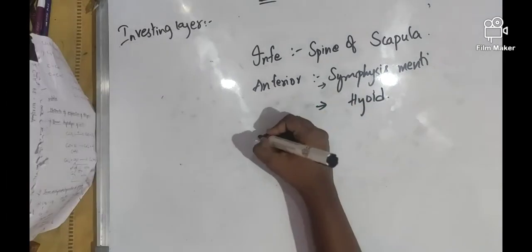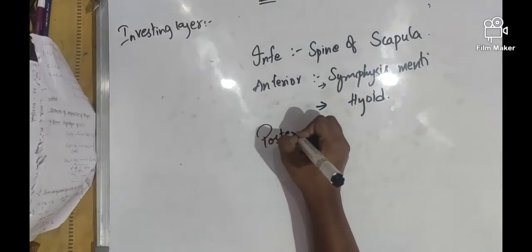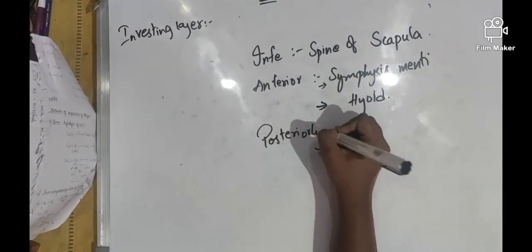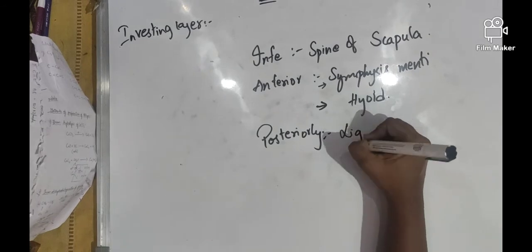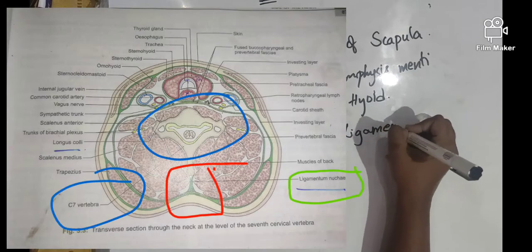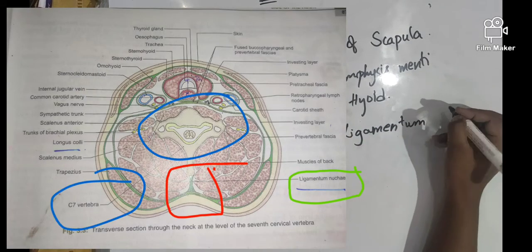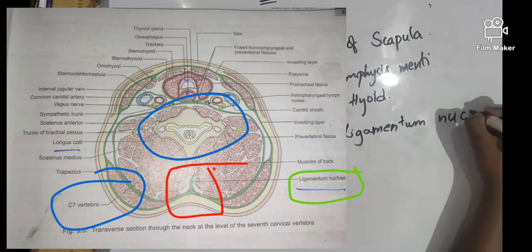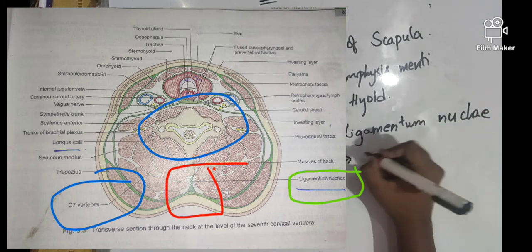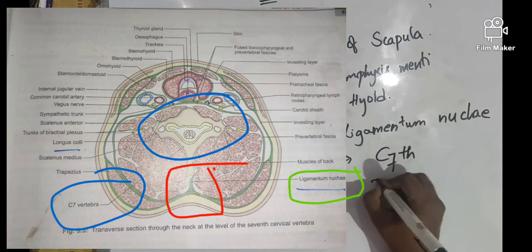Posteriorly, we can see ligamentum nuchae, which is present posterior to the deep cervical fascia, and the 7th cervical vertebra.